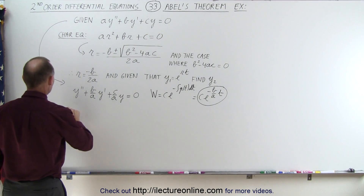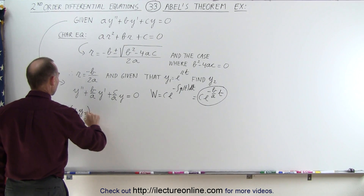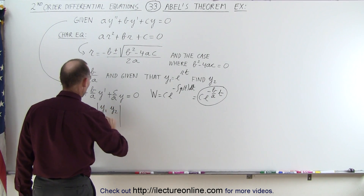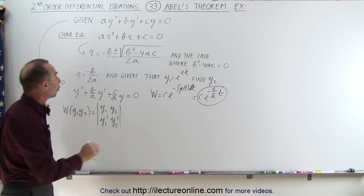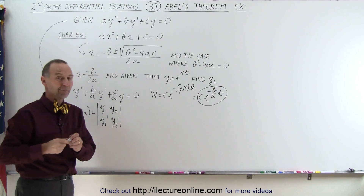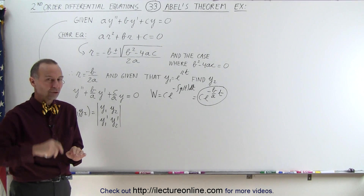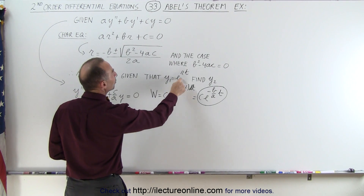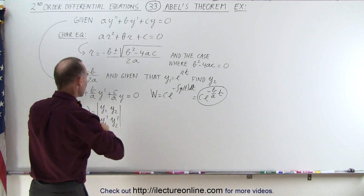We also know that the Wronskian of the two solutions y1 and y2 can be written as the determinant of y1, y2, y1 prime, and y2 prime. Notice they've already given us one of the solutions, which is the necessary part in this case — otherwise it would be difficult to find both solutions using this method. They tell us that one solution is e to the rt, where r equals minus b over 2a.